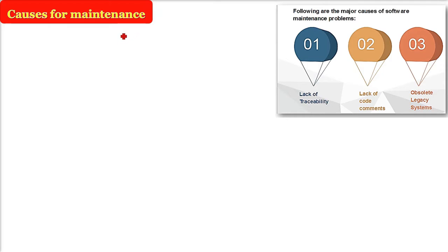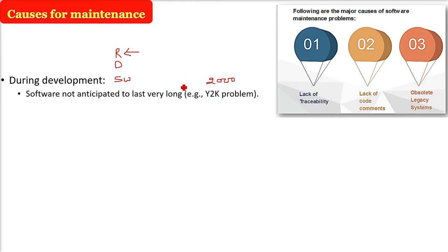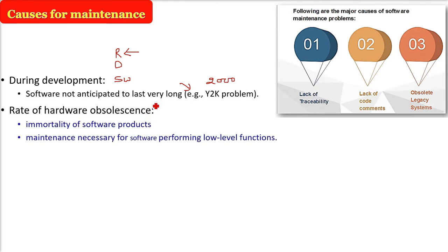What are the causes for maintenance? Why do we do software maintenance? First, while you are developing software — you have the requirement analysis, design, and on the basis of that the software is coded — you are solving a particular problem of a user. There are problems which cannot be foreseen, like the Y2K problem. Nobody had thought about it, and these kinds of problems can come anytime. If you are not able to anticipate them during development, when the product is already delivered and this problem comes up, you need to do the maintenance.